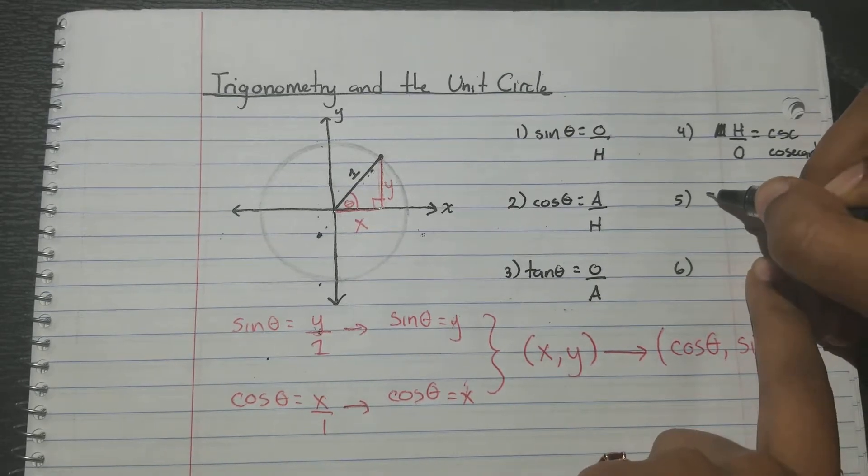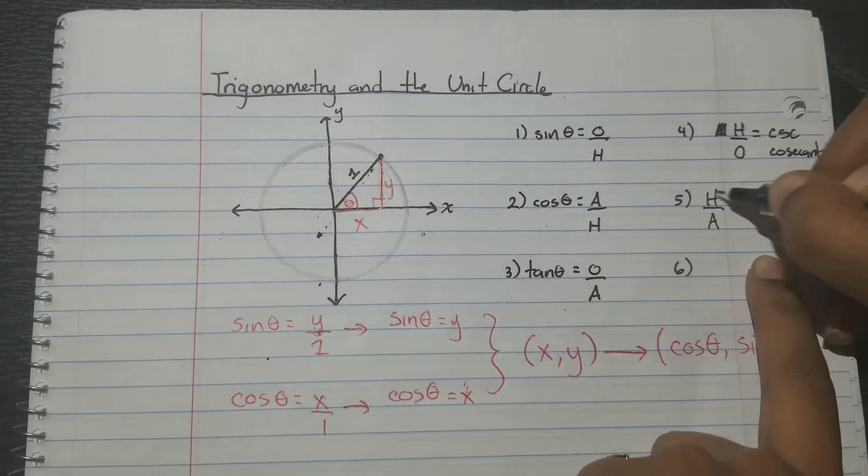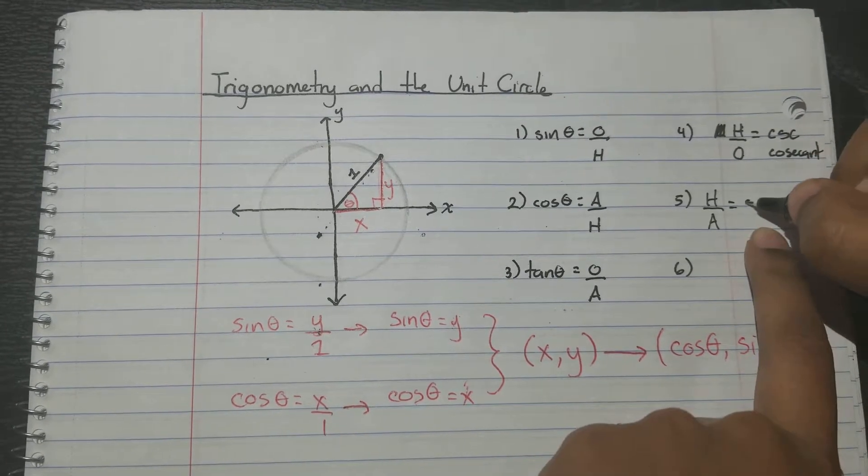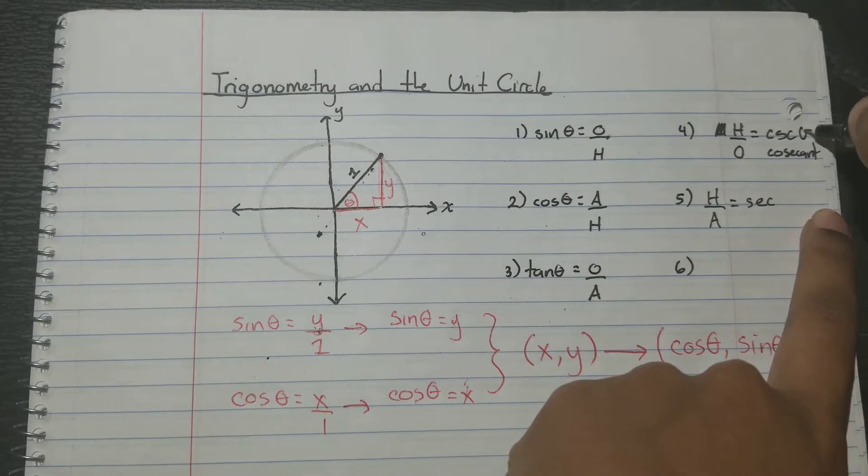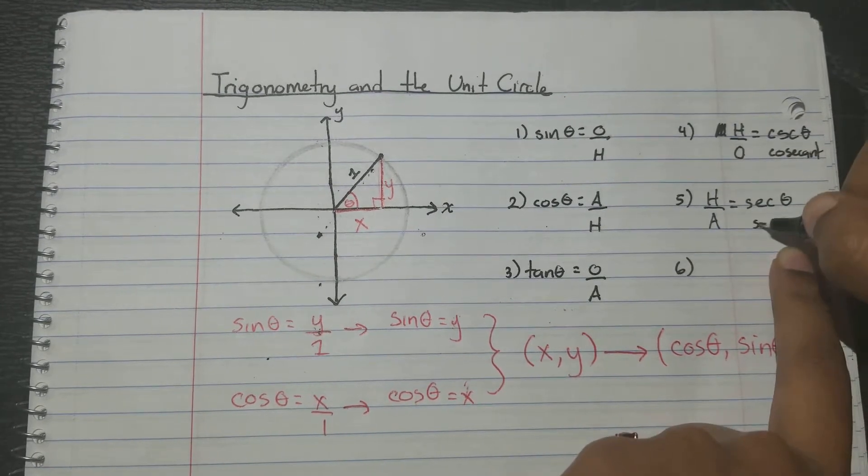What about flipping this? So that's going to be h over a, or hypotenuse over adjacent. And that's called secant. So secant theta.